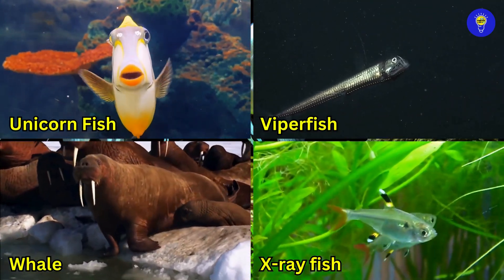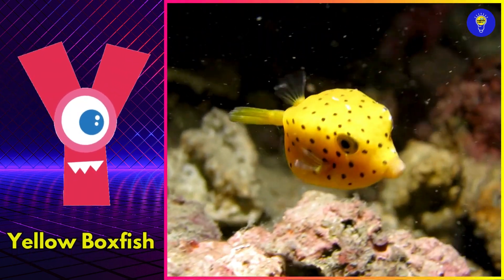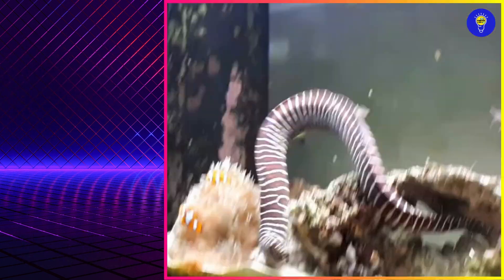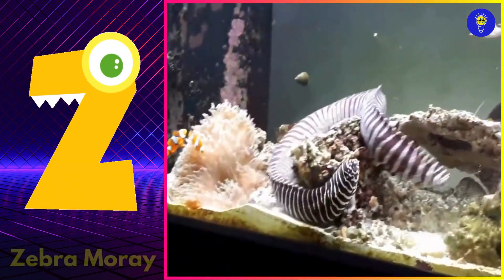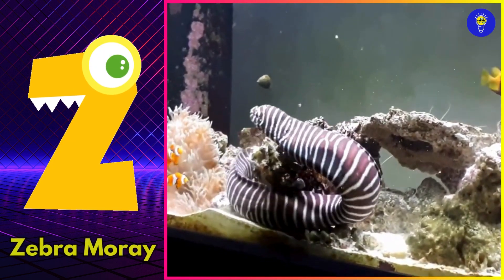Y is for yellow boxfish. Yuh, yellow boxfish. Z is for zebra moray. Z, zebra moray.